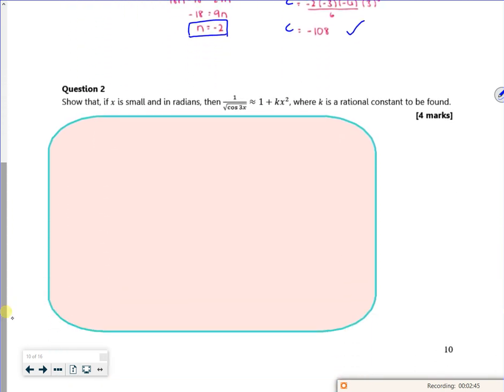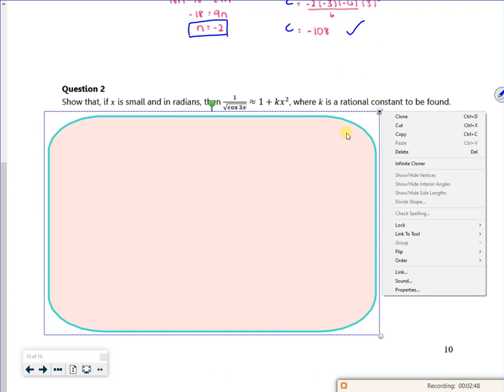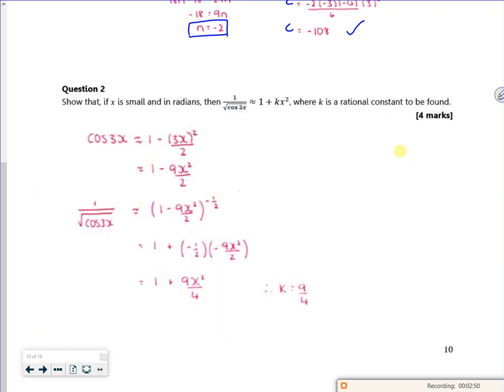Let's have a look at question 2. So the first thing is, it says it's small and it's in radians. So we're looking at small angle approximations. In your formula booklet, it tells you that cos of x is 1 minus a half of x squared. That's what it tells you in the formula booklet.